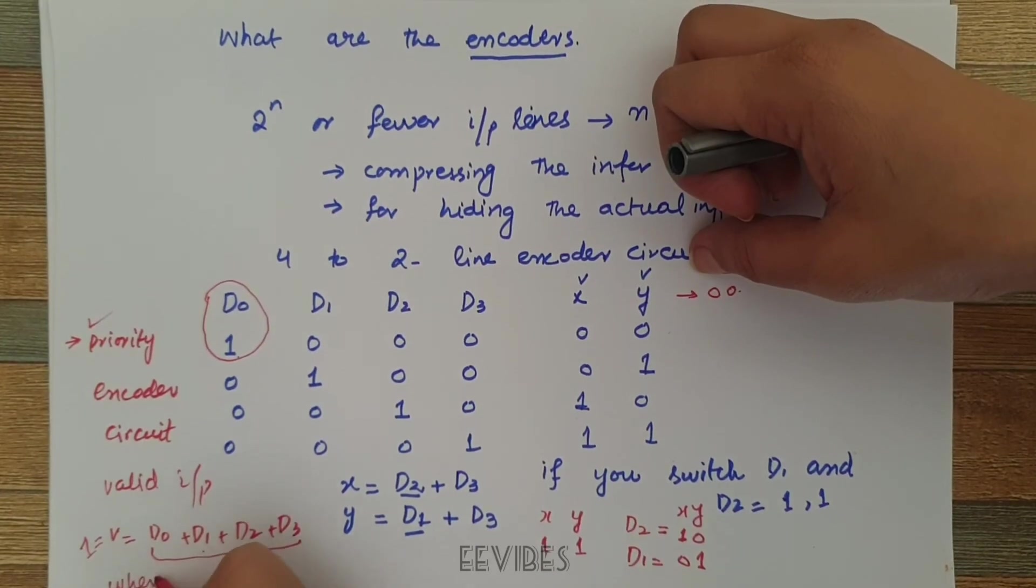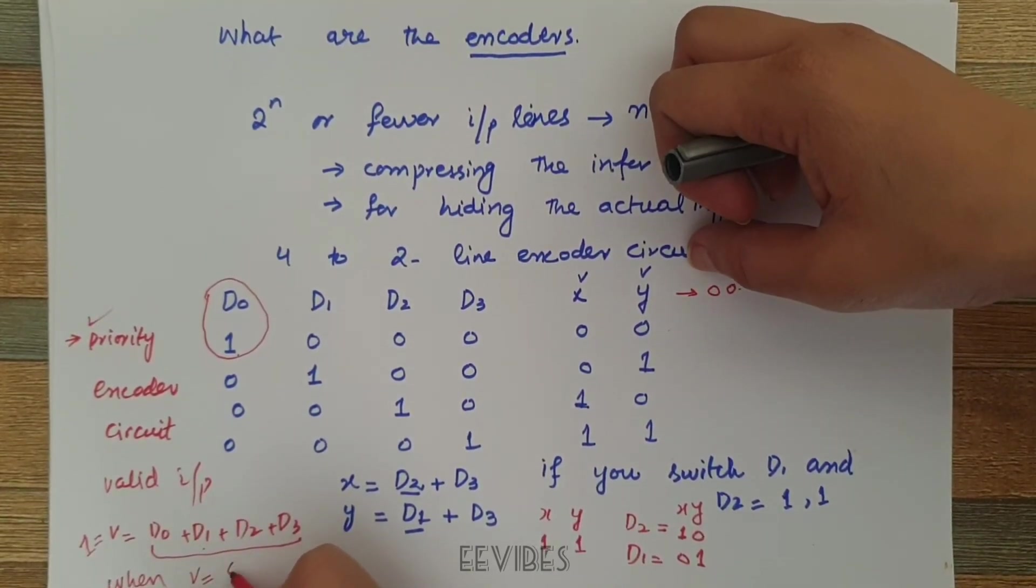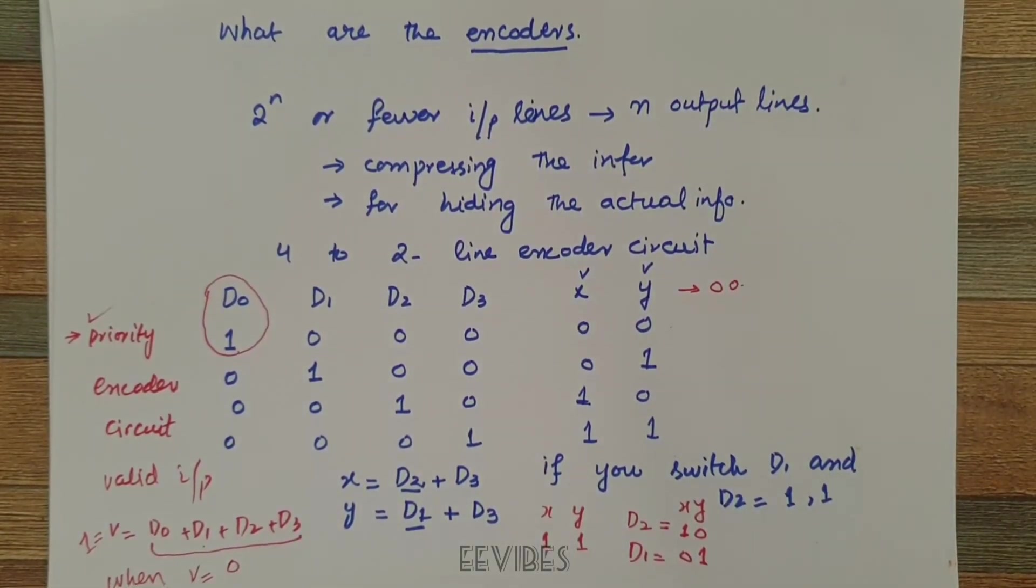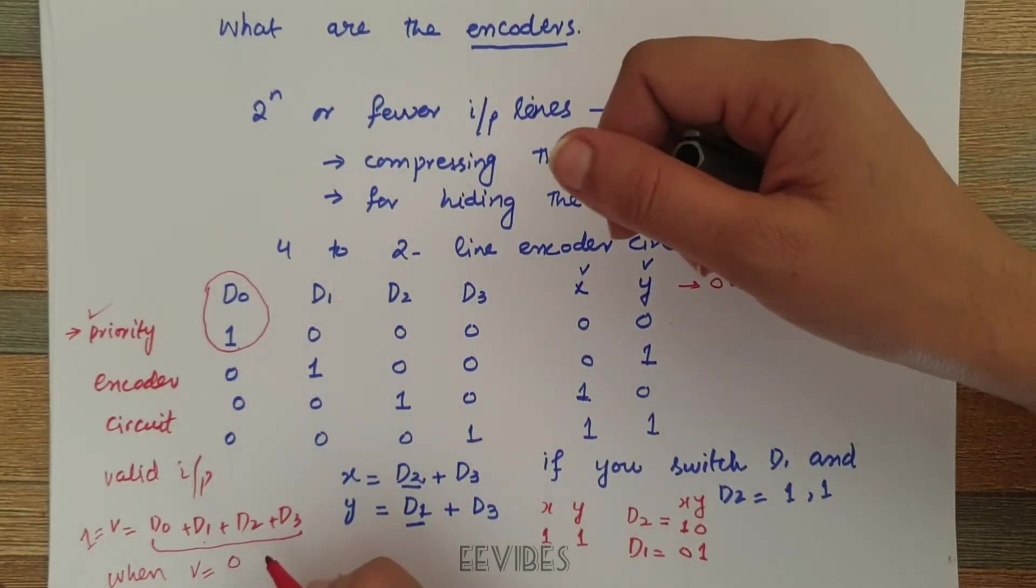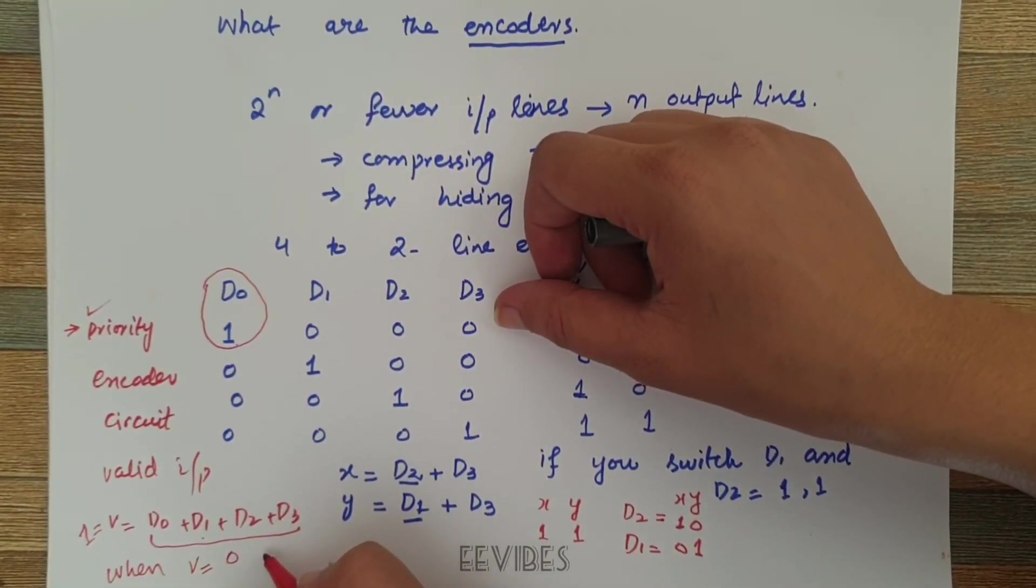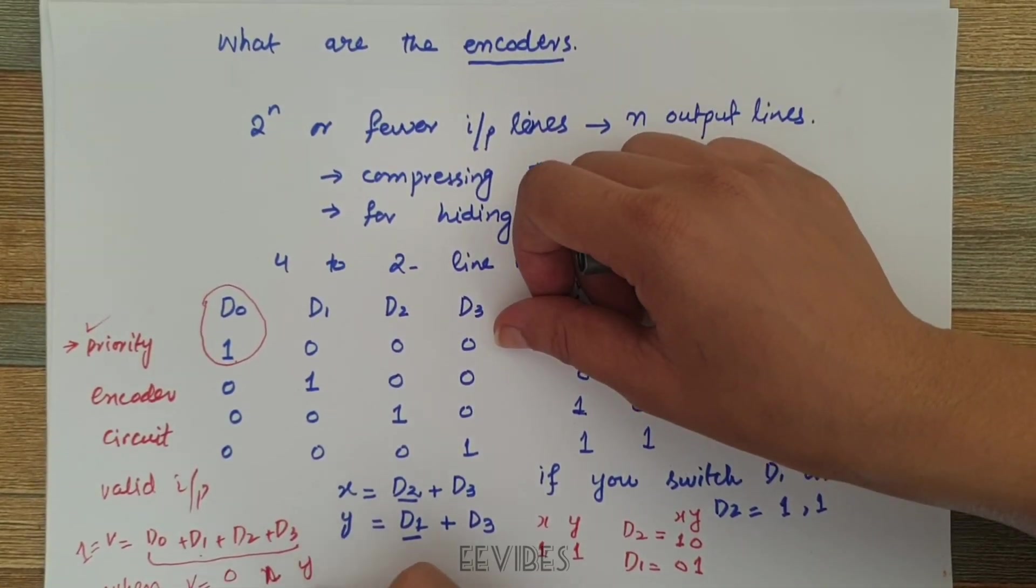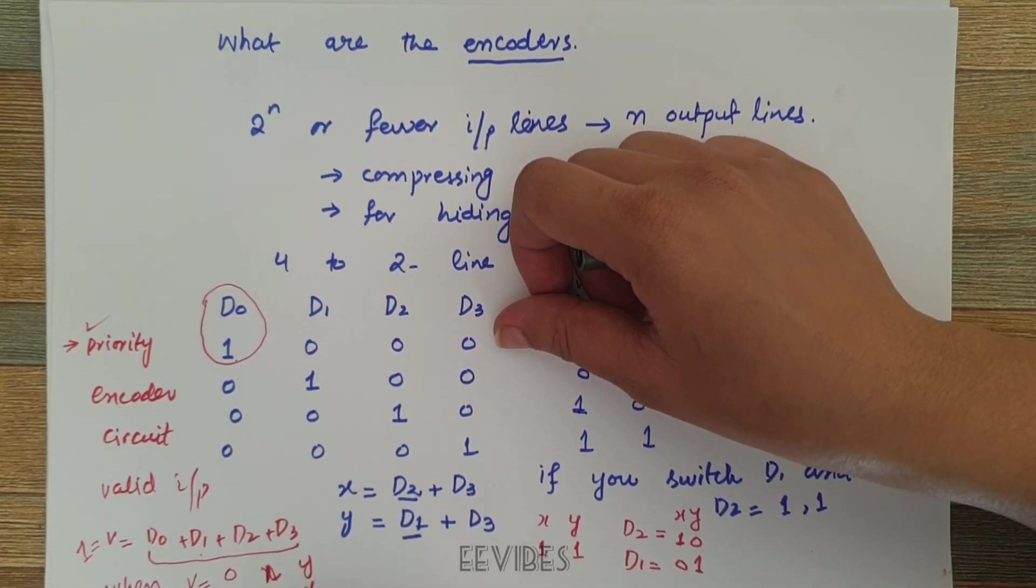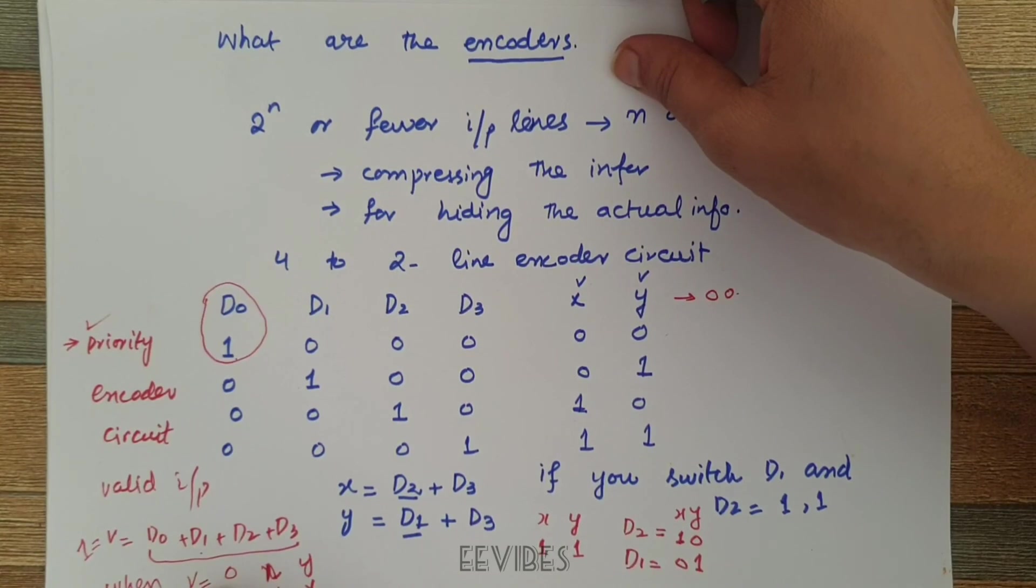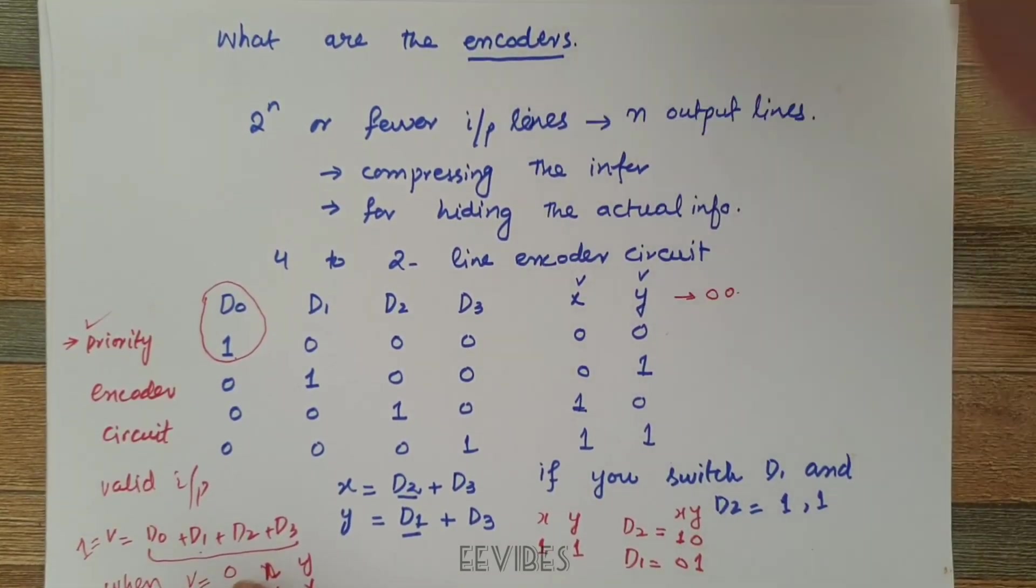When v is equal to 0, it means when there is no valid input present, then the values of x and y will be in the don't care conditions. So you will not bother about the output value of the function as long as you are not getting some valid input.